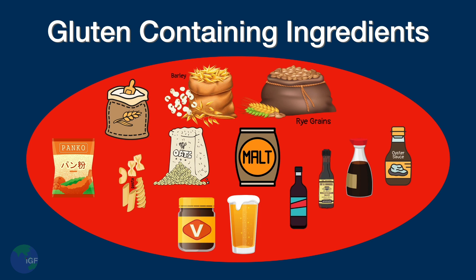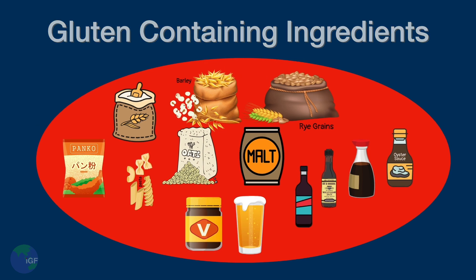Many sauces include wheat or barley as an ingredient. Common ones include soy sauce, oyster sauce, teriyaki sauce, and Worcestershire sauce. People who are on a gluten-free diet can have lots of other foods. Items in the red circle need to be eliminated, but everything outside of the red circle is generally fine.